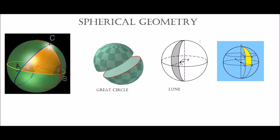Now that we've got the great circle covered, we can move on to the lune. The lune is a section of a sphere which is bounded by two great half circles. In this case, this is the first great half circle, and this is the second great half circle. The area in between them, which is shaded in grey, is the lune.